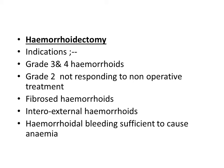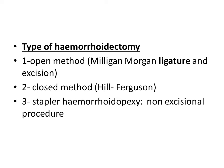Hemorrhoidectomy indications: it should be done for all grade 3 or 4 hemorrhoids, and for grade 2 hemorrhoids not responding to conventional treatments. Also indicated for fibrosed hemorrhoids, internal-external hemorrhoids, and hemorrhoidal bleeding sufficient to cause anemia. Types of hemorrhoidectomy: the open method — Milligan-Morgan ligation and excision; the closed method — Hill Ferguson method; and the stapler hemorrhoidopexy, most recently introduced as a non-excisional procedure. Most surgeons still use the open Milligan-Morgan method.